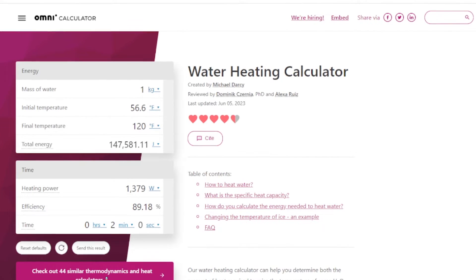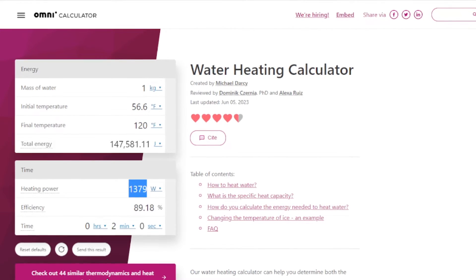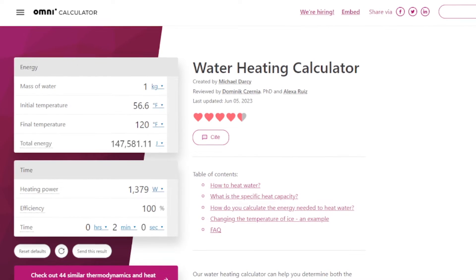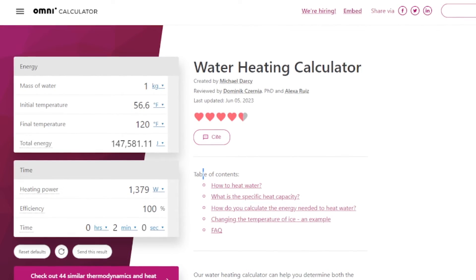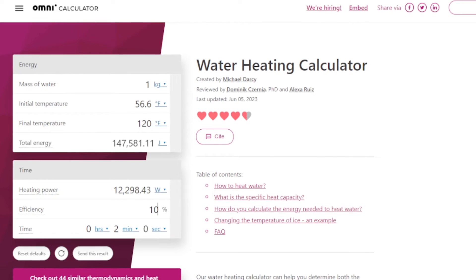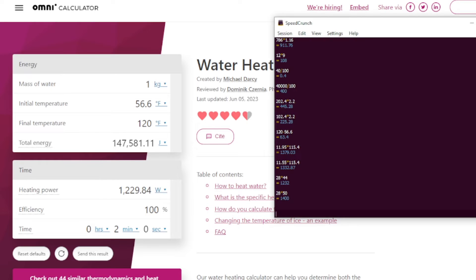If we wanted 100% efficient, our power consumption would have to be, let's see, this calculator will work 100% efficient, it would be 1230 watts. So 1230 divided by 115, we would want to be drawing 10.7 amps instead of 12.